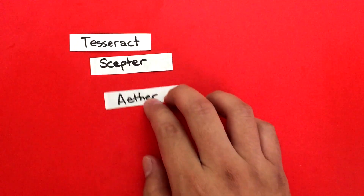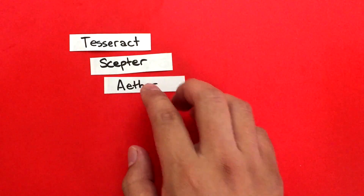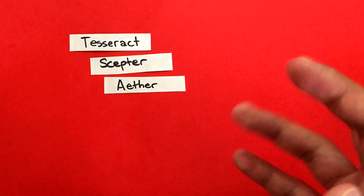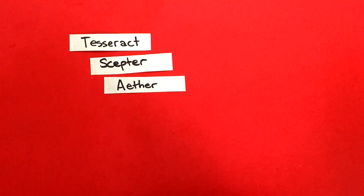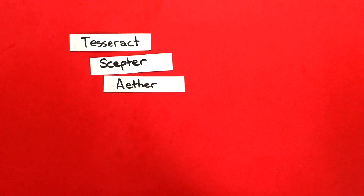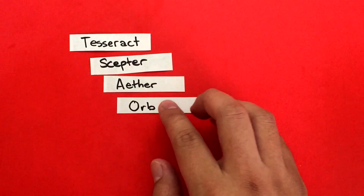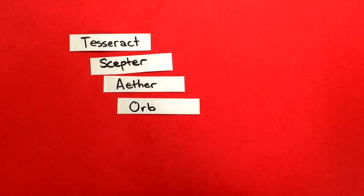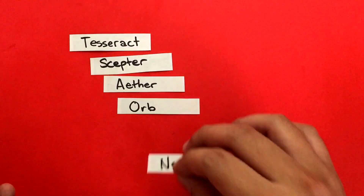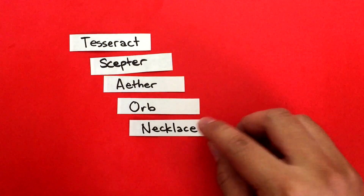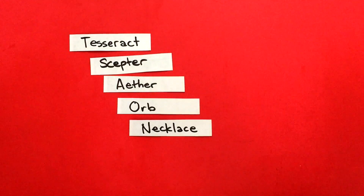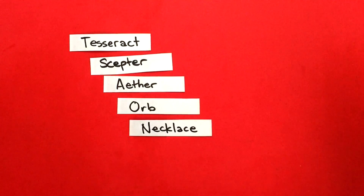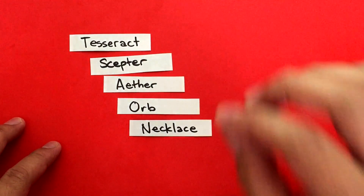I believe the next one was the Aether, which we saw in Thor the Dark World, and that's that red crazy stuff from that movie. That is the Reality Stone. The next Infinity Stone that we saw was the Orb, and the Orb was the Power Stone, and we saw that in Guardians of the Galaxy. And this current one is the Time Stone, and the Time Stone was in the necklace called the Eye of Agamotto, and we saw that in the most recent movie, Doctor Strange.